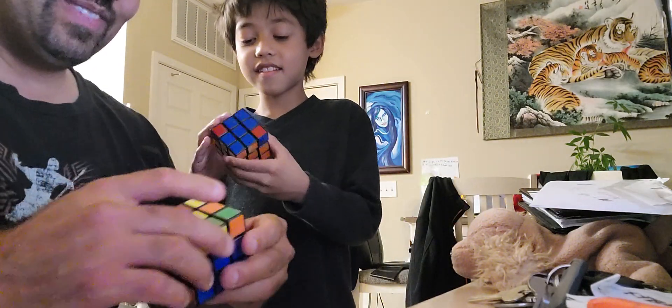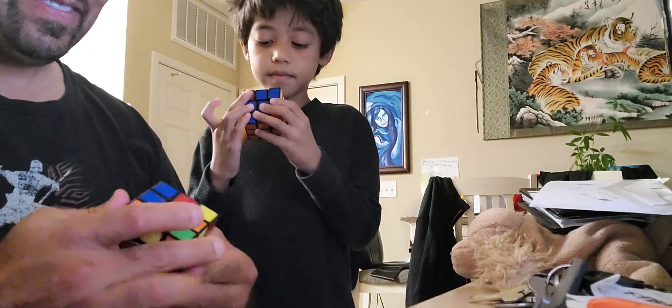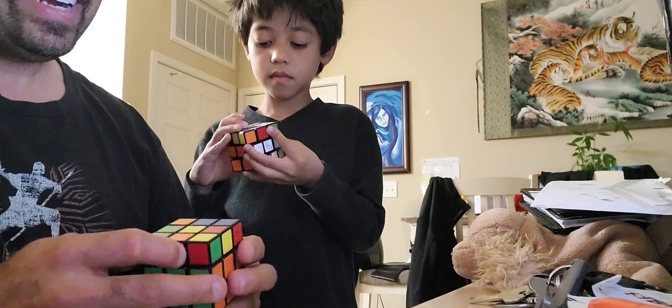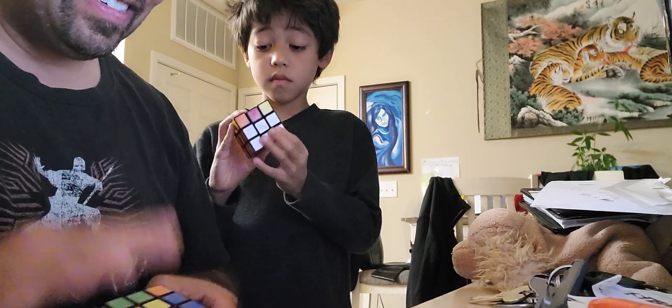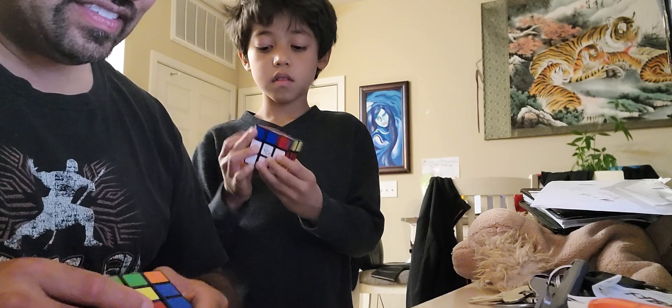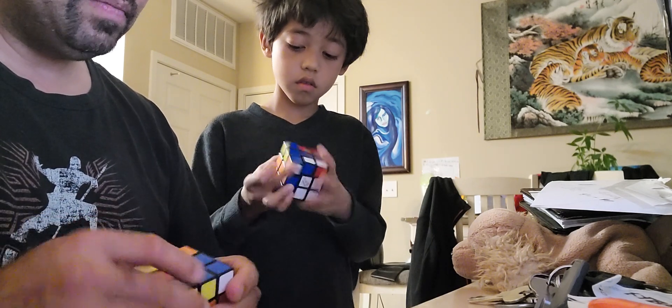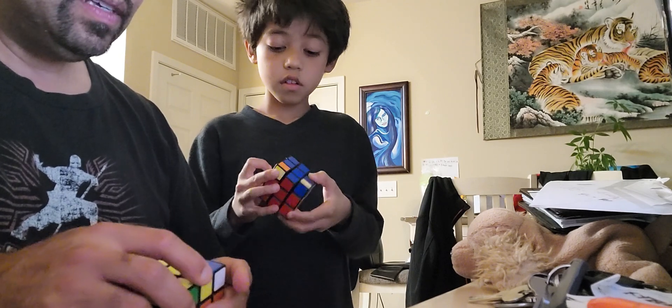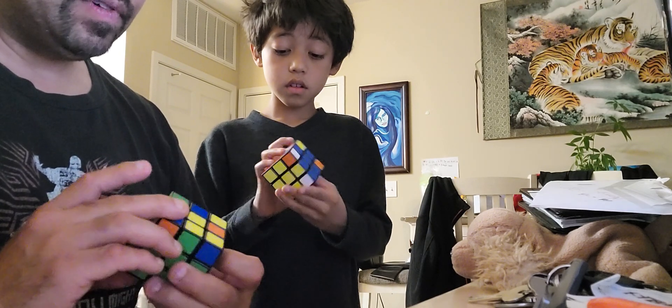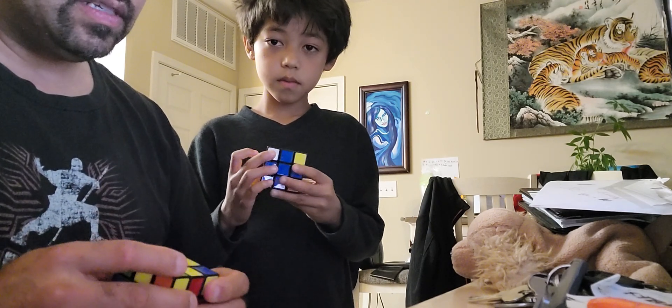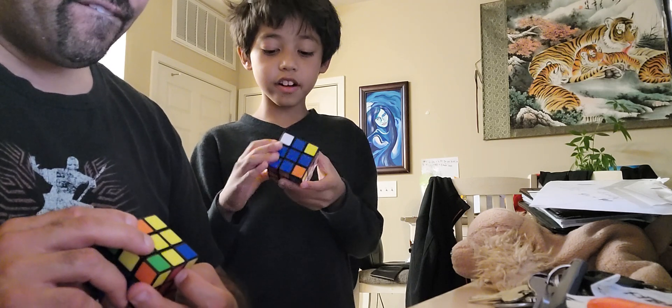Oh, I'm starting to lose my ability to do second layer for some reason. Probably because I haven't practiced in a while. Alright, so now we've got to do UF. Front, right, up. R prime. U prime. Front prime. Put that in the back. I already did fluff.